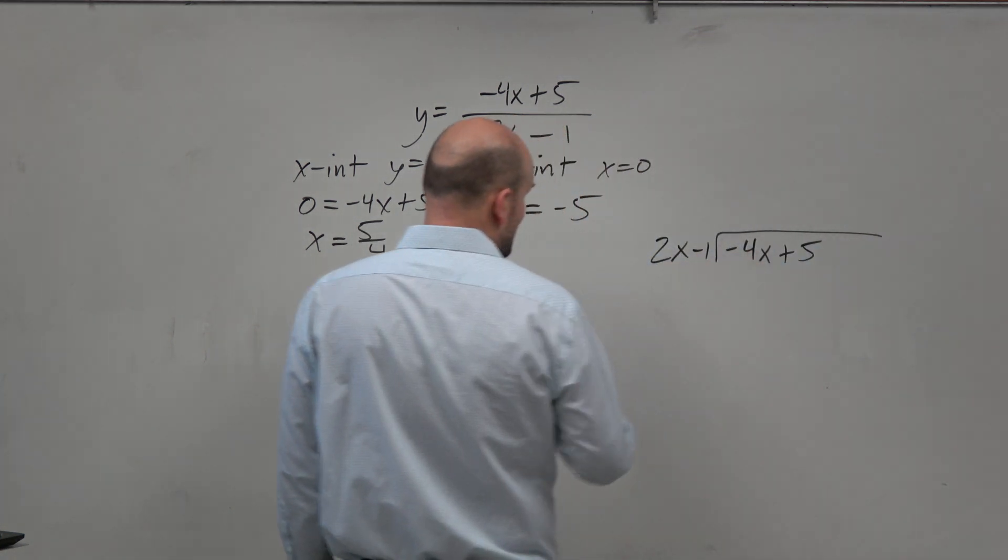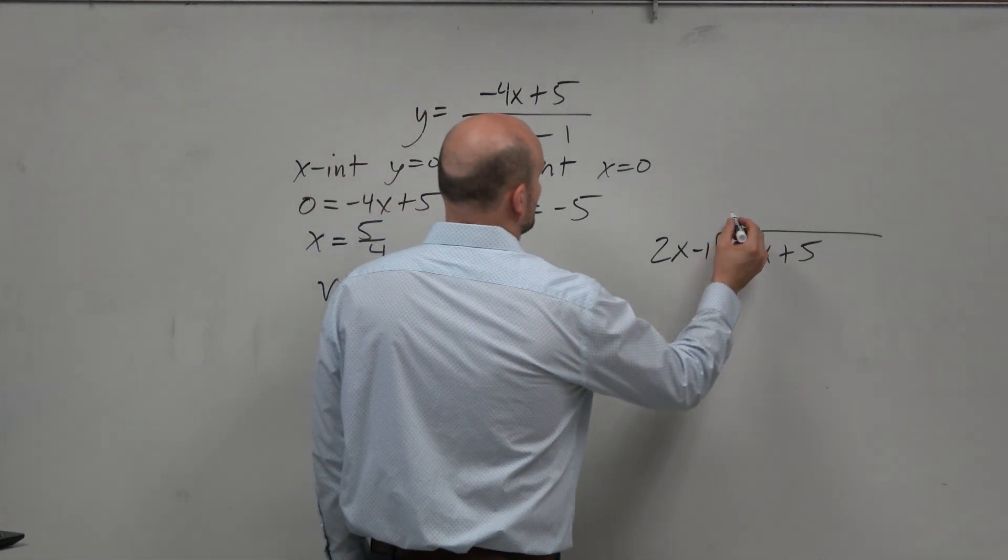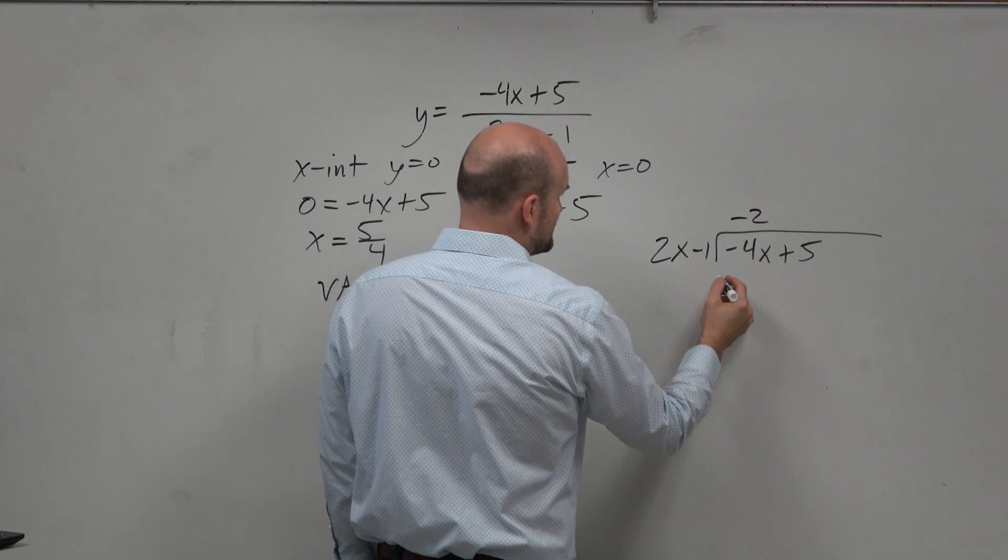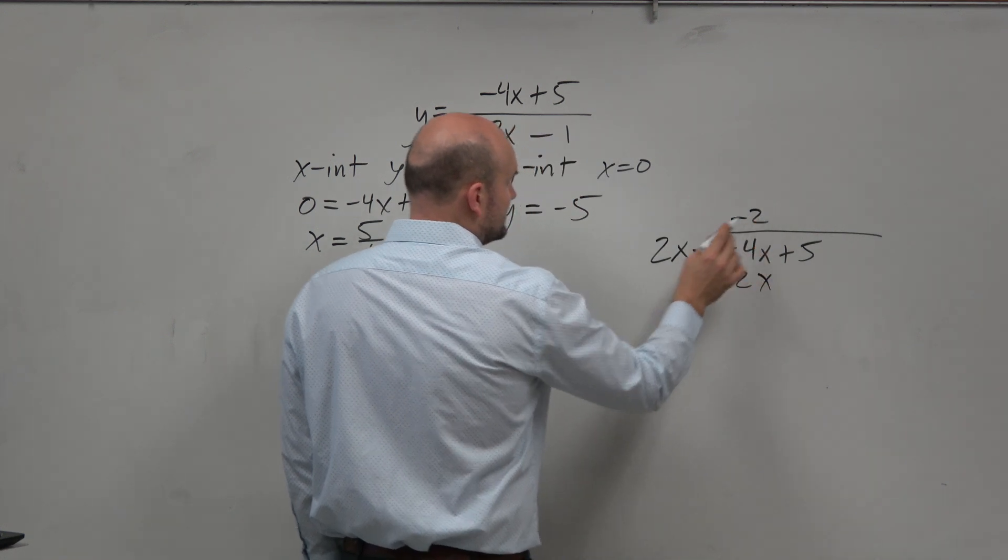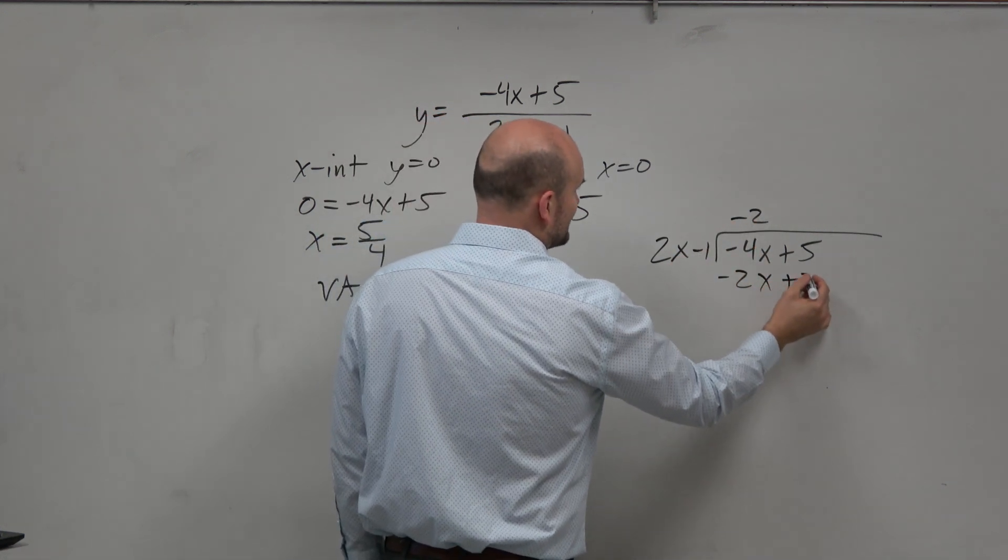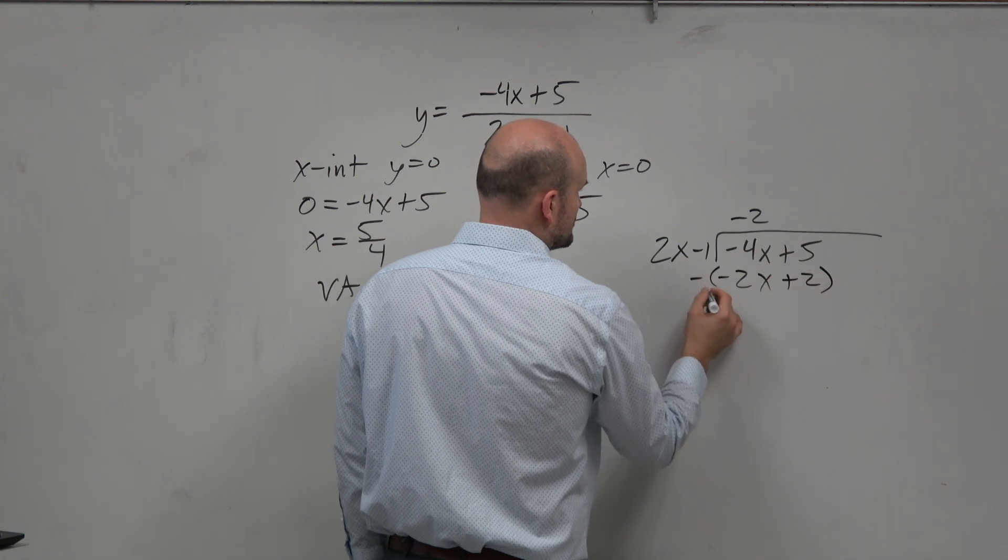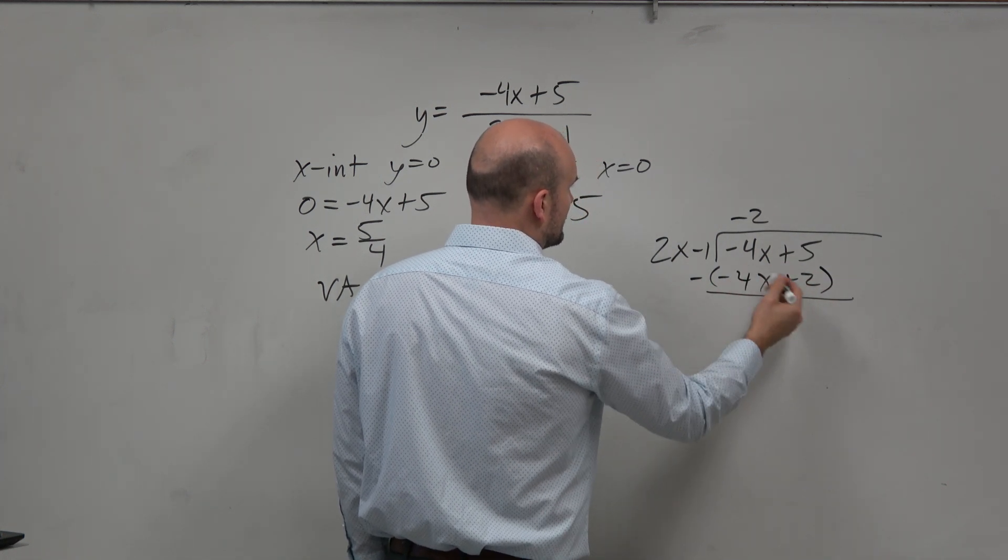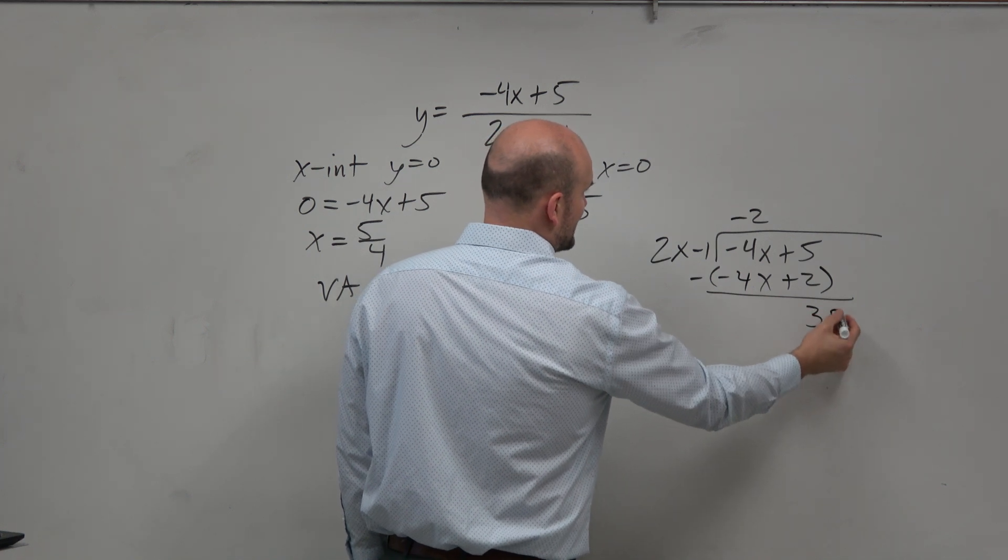So we say, all right, how many times does 2x divide into negative 4x? Negative 2. Negative 2 times 2x is going to be negative 4x. Negative 2 times 1 is going to be a positive 2. Subtract your rows. There's a 4x. It has to be the same. Subtract your rows, you get 3. That is a remainder.